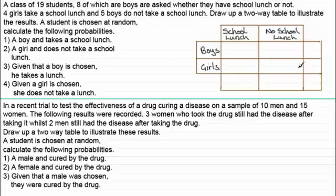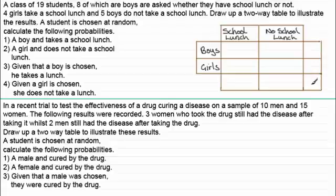Similarly this cell gives us the total for all the girls. This cell gives us the total for all school lunches. This cell gives us the total for no school lunches, and this cell is the total for everything. In this case we've got a class of 19 students, so we put 19 in there.